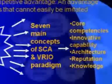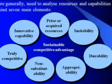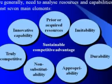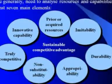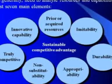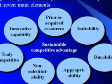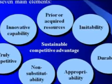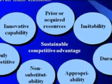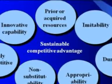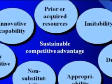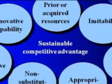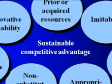There are usually seven elements that can be associated with the RBV. Number one, prior or acquired resources. Number two, innovative capability. Number three, being truly competitive. Number four, substitutability — a resource that cannot easily be substituted for another. Number five, appropriability — a resource that is uniquely possessed by the organisation. Number six, durability — a resource that lasts over time. Number seven, imitability — a resource that cannot be easily imitated.